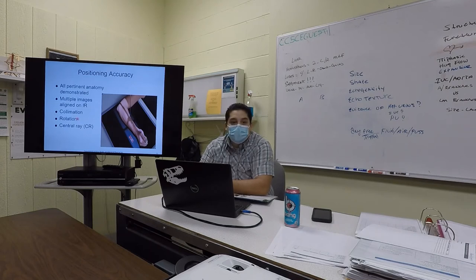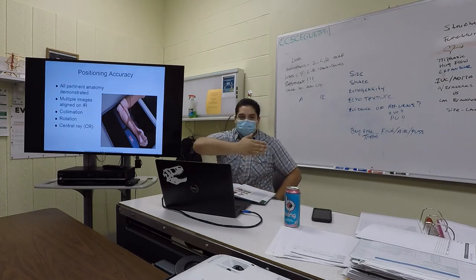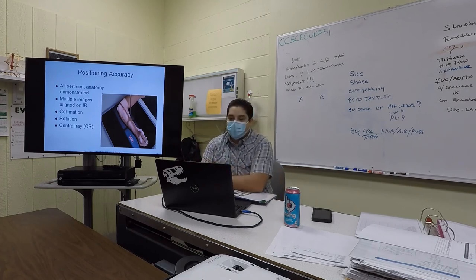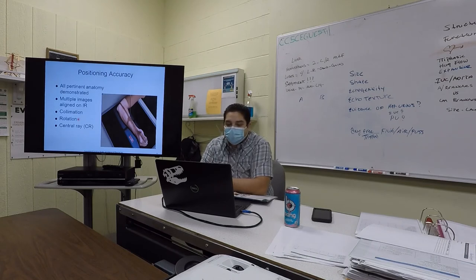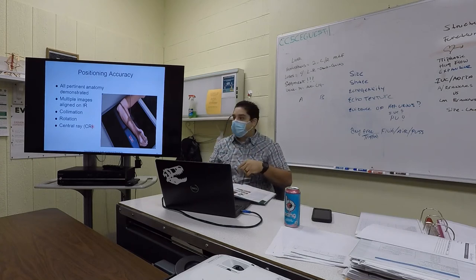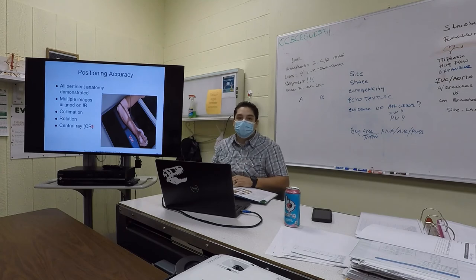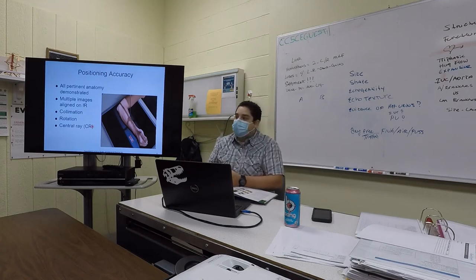Body parts should be rotated properly - for example, neutral rotation means the hand is neither palm-down nor palm-up, just the correct amount of rotation. The central ray is the middle, strongest, and straightest part of the x-ray beam - it works the same as the brightest center of a flashlight beam. The central ray, abbreviated CR, should not be confused with CR computed radiography - look at the context.